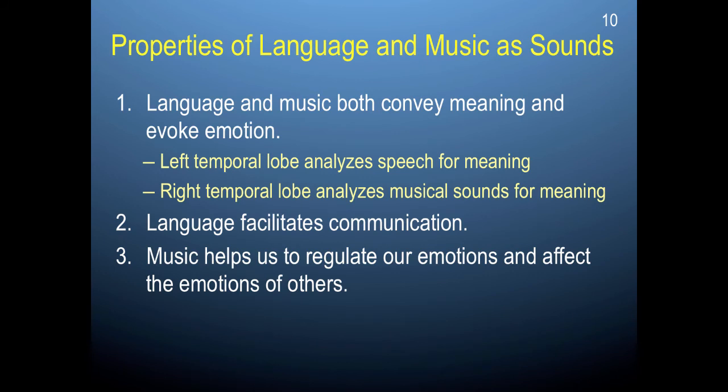There are a number of properties of language and music that are important in why they might be processed the way they are in the brain. Language and music convey both meaning and evoke emotion. It is likely that very early on in our development, language — and relatedly aspects of music — were prioritized and were adaptive because they conveyed this combination of meaning and emotion.